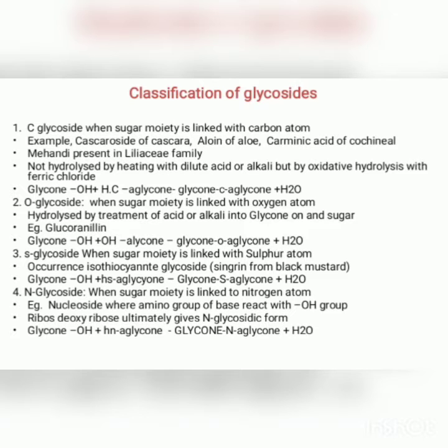Second, O-glycosides: when the sugar moiety is linked with an oxygen atom, hydrolyzed by treatment with acid or alkali into glycone, aglycone, and sugar. For example, glucoraniline. The reaction is: Glycone–OH + HO–Aglycone → Glycone–O–Aglycone + H₂O.